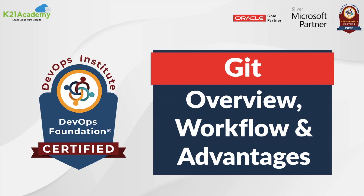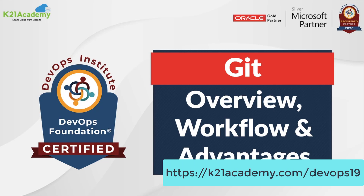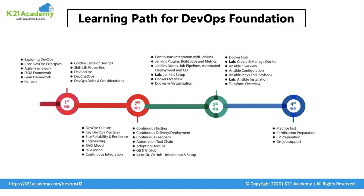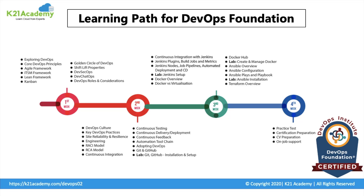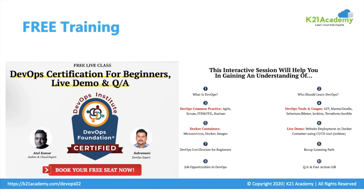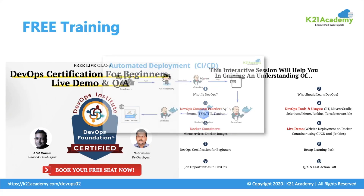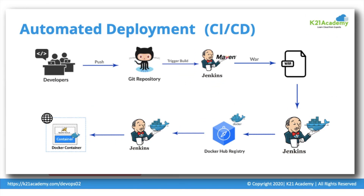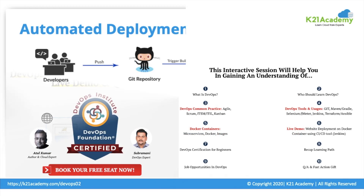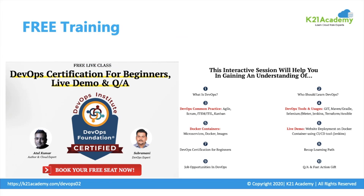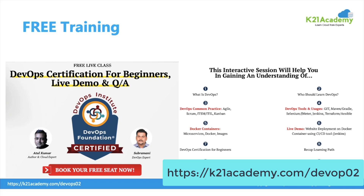That was our DevOps expert talking about version control system. You can also check out our blog on Git by visiting k21academy.com/devops19. Git is part of our DevOps Foundation training program where we cover all these topics in detail. If you are not yet DevOps certified and would like to know what to expect in the exam or how to prepare, we invite you for a free 90-minute session with a DevOps Institute and Microsoft-certified DevOps expert trainer. We'll cover the DevOps Foundation course, a live demo of website deployment on Docker using Jenkins CI/CD, DevOps tools, and certification exam information. Register for free at k21academy.com/devops02.